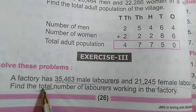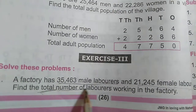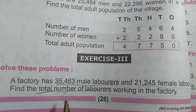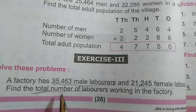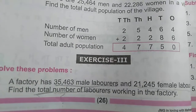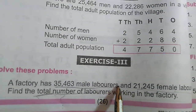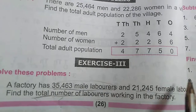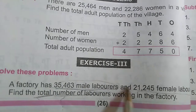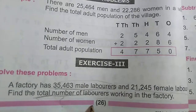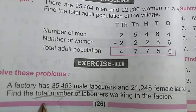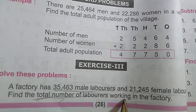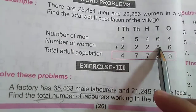We need to find the total number — mark what we need to find with a question mark. We will add these numbers. First write the number of male laborers, then the number of female laborers, and in the next line write the total number of laborers.